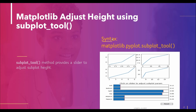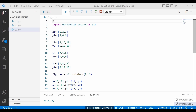Now we will move to the third method: the subplot_tool function, which we use to adjust the subplot height. This function provides an interactive slider to adjust the subplot — as you can see in the figure it shows a slider by which we can adjust the height or hspace of the subplot. The user can drag the slider to adjust according to their needs without passing any value to a specific parameter. Let's see an example.